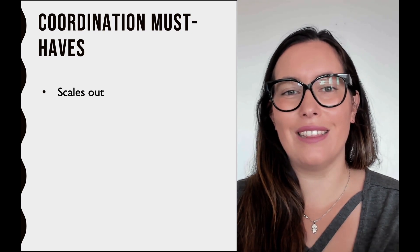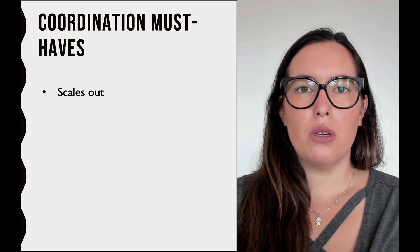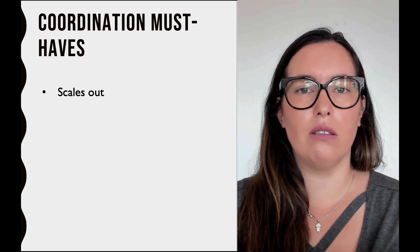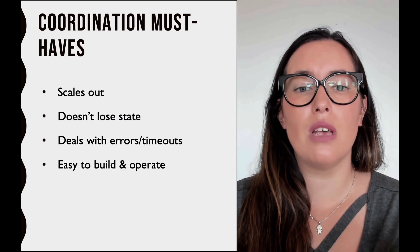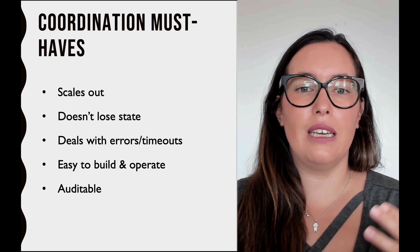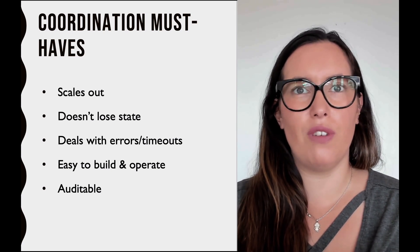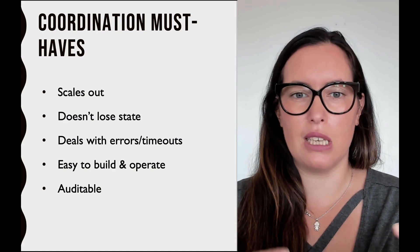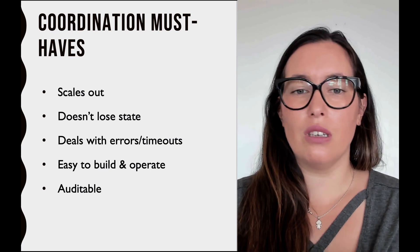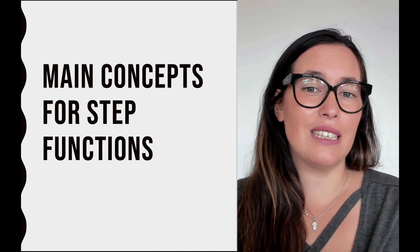These are some of the problems that you can solve with step functions. A lot of these things we can do without step functions, but we need to implement them ourselves — a system that scales out, doesn't lose state, can deal with errors and timeouts, is easy to operate, and is auditable. These are all things that are built into step functions. It scales out automatically. It is a state machine so it has state, whereas our Lambda functions are stateless. All error handling, timeouts, and backoff logic are built in, and it's very easy to operate.